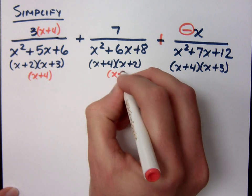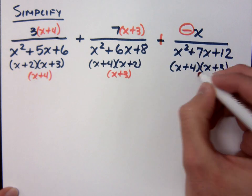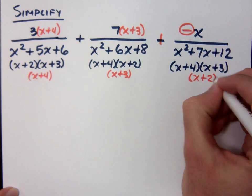And finally, the last guy is missing what? x plus 2. He's missing the factor of x plus 2.